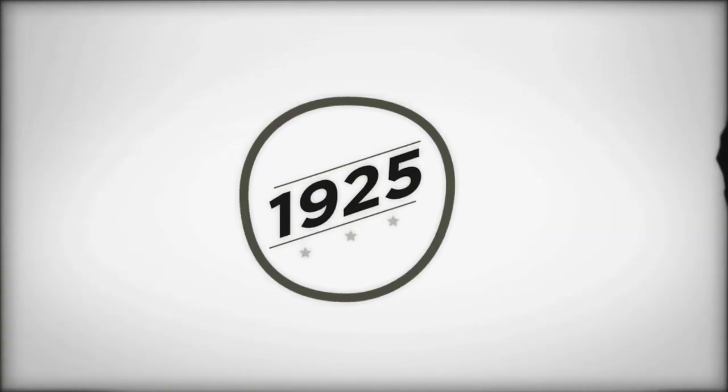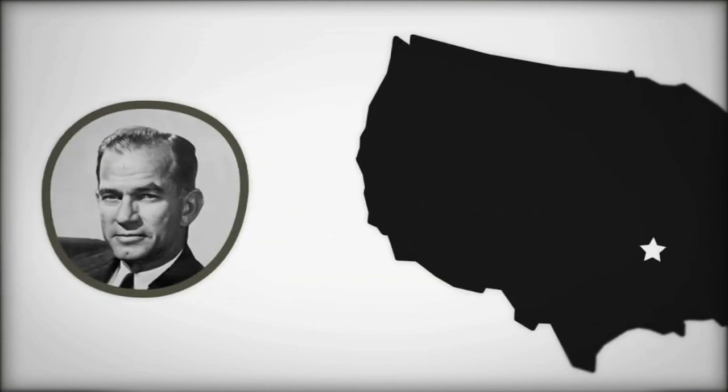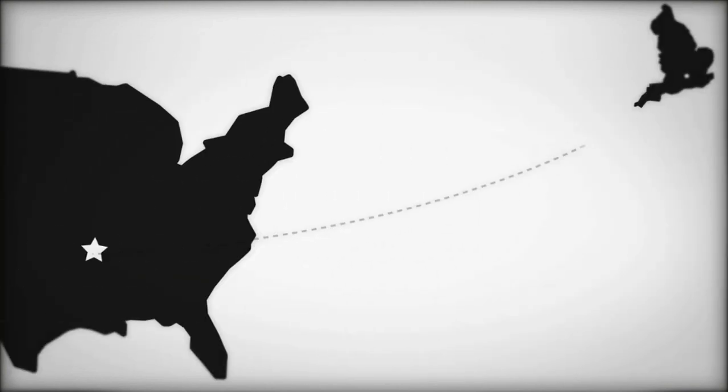The year was 1925. After graduating from college, James William Fulbright left his home in Arkansas to embark on a journey across the Atlantic.